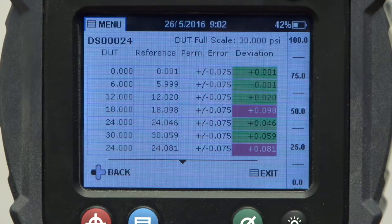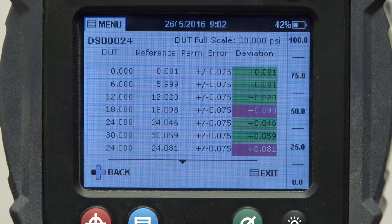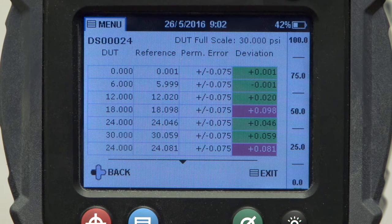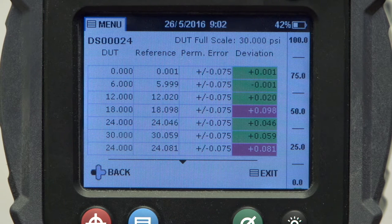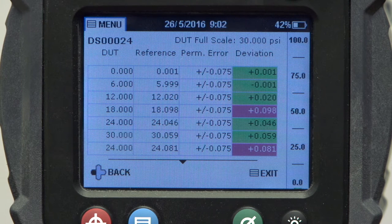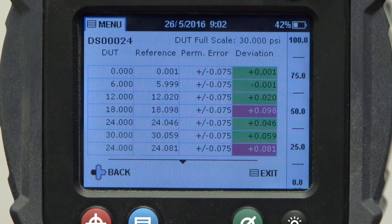When you're finished with the test you can immediately view the data set on screen. This gives you an easy visual verification of pass-fail points, and if the device has failed you can make adjustments to the gauge, run the test again and log the results.